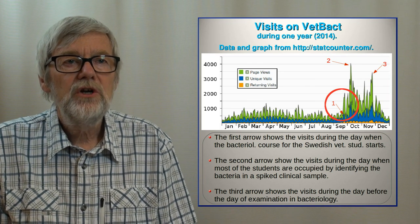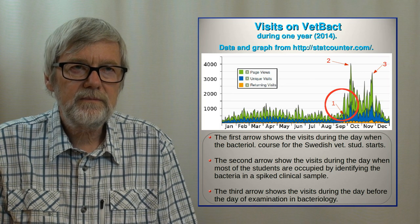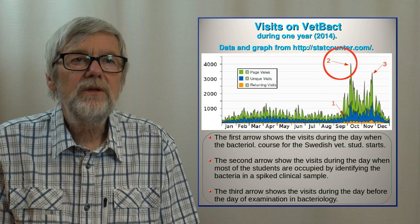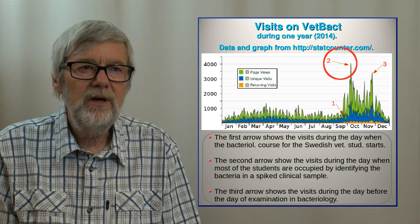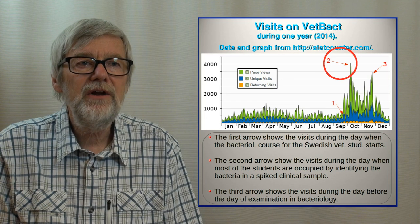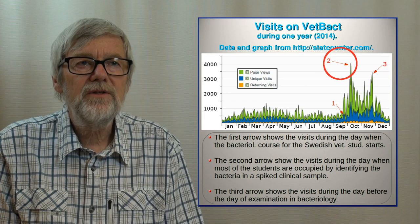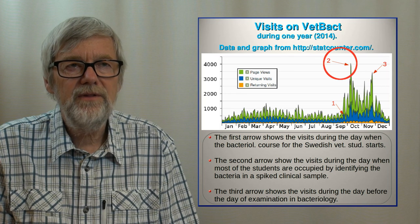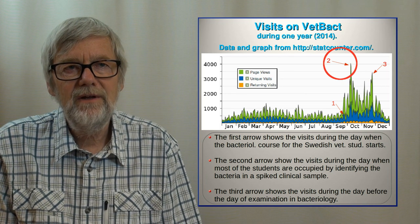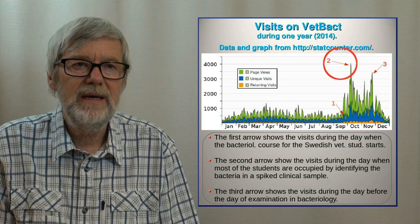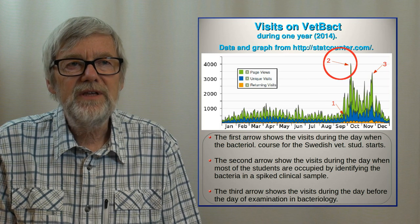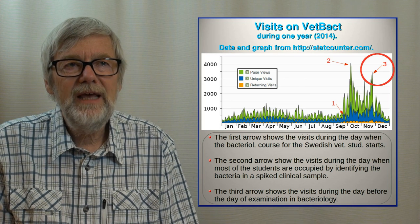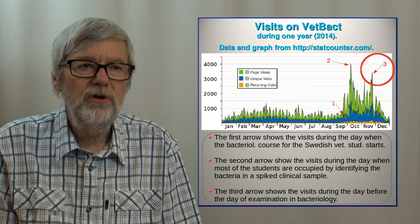Arrow number one shows the day when the bacteriology course starts in Sweden. At arrow number two you can see a peak that coincides with the day when students are performing experiments to find out which bacteria an unknown clinical spiked sample contains. During that day, students visit VetBACT a lot to compare their lab results with the images and information in VetBACT. Then at arrow number three we have another peak that coincides with the day before the written exam in bacteriology.